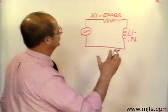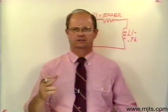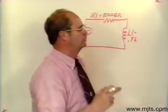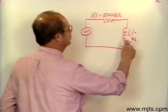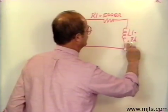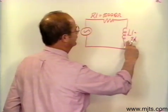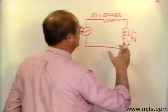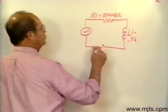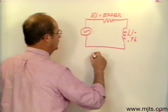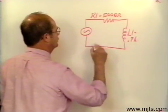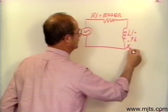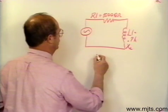We know the rules for series circuits. What we need at this point is what opposition to current flow is created by that inductor. We're going to be looking for our inductive reactance — X sub L is equal to our inductive reactance.